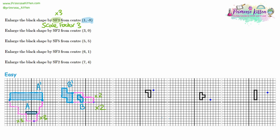Moving on to question three. Again, find your center of enlargement — this time it's at five, five, drawn on there for us. Choose a nearby corner of the shape and look at the distance — it's a distance of one. The scale factor for question three is scale factor five. So if our original distance is one, multiply it by five and we get a distance of five — one, two, three, four, five. And now we've got the location of our brand new top right corner.